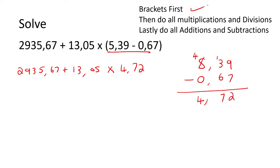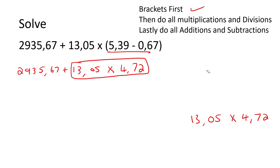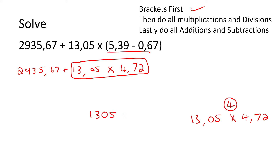We've done brackets. The next step says do all multiplication and division. So we have 13 comma zero five multiplied by four comma seven two. We count all the decimals from the back of each number — one, two, three, four — so a total of four decimal places. Take away the decimals, so now we have 1305 multiplied by 472, and at the end we will remember to put the decimals back four places.